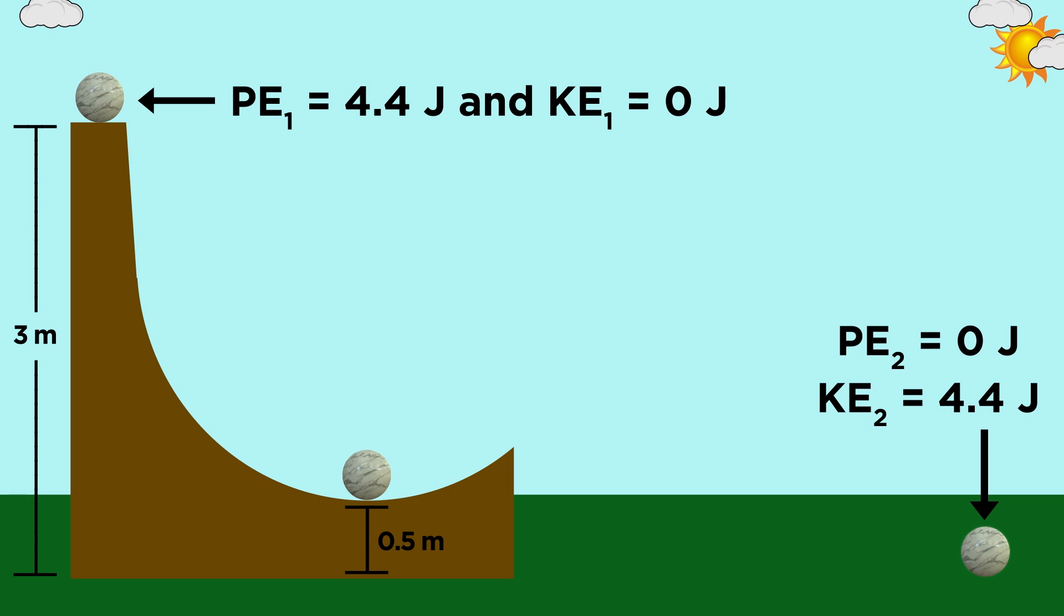That also means that the instant the ball hits the ground, where it has zero potential energy, it must have converted all of its potential energy into kinetic energy. So the kinetic energy of the ball at that moment must also be four point four joules.